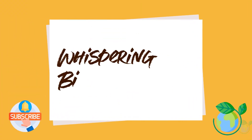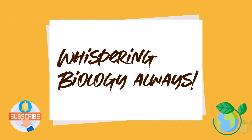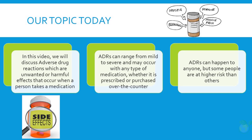So it's essential to be aware of the potential risks and how to prevent them — our topic today. In this video, we will discuss adverse drug reactions, ADRs, which are unwanted or harmful effects that occur when a person takes a medication. ADRs can range from mild to severe and may occur with any type of medication, whether it is prescribed or purchased over-the-counter. ADRs can happen to anyone, but some people are at higher risk than others.